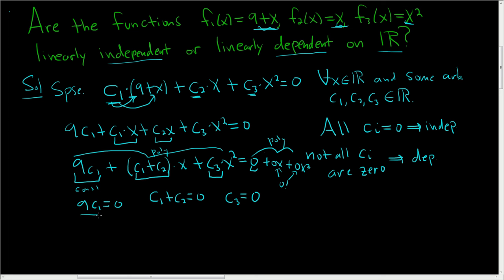To finish we divide this by 9. So we get c sub 1 equals 0. Here you plug in the 0. So you get 0 plus c sub 2 equals 0. So c sub 2 is 0. And then we've already determined that c sub 3 is 0.